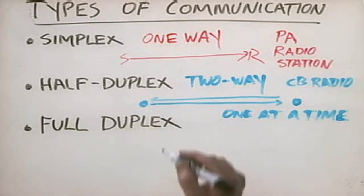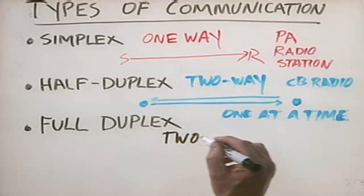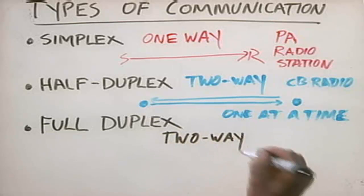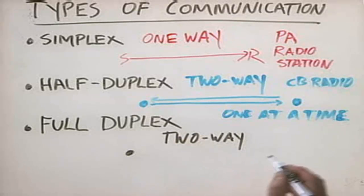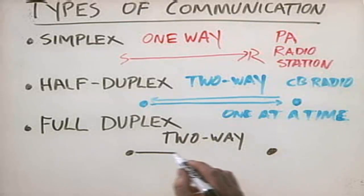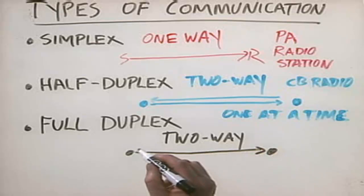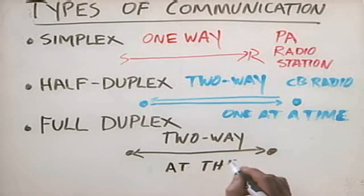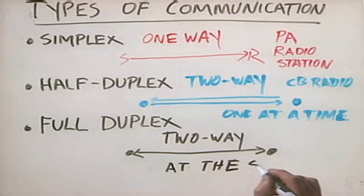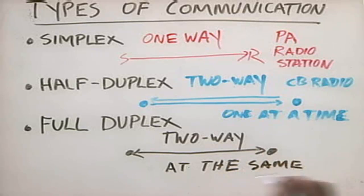Now, full duplex, on the other hand, is also two-way communications. However, both hosts can communicate, they can send or they can receive at the same time.